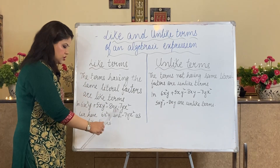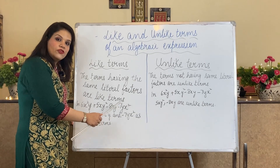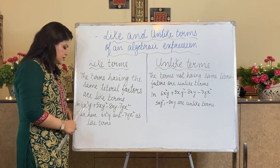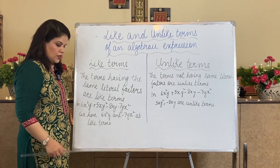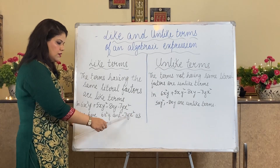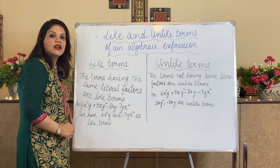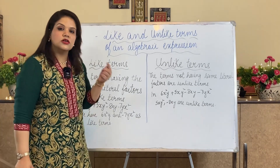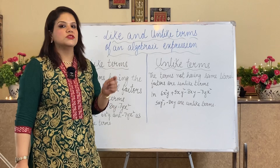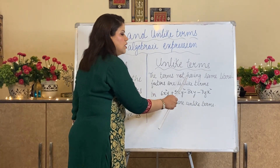So in this expression — 6x²y, 5xy², 8xy, 7yx² — these are the four terms. The first one and the last one are like terms because they have the same variable factors: x appears 2 times and y 1 time in both. For checking like terms, we check their literal factors. If they are the same, the terms are like. If not, they are called unlike terms.